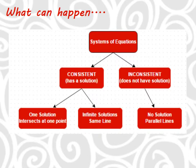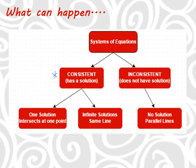Before we go too far, let's talk about what can happen — we touched on this yesterday. When you have a system of equations, it's always going to end up being consistent or inconsistent. Consistent means your system will have a solution: either one solution if the two lines intersect, or infinite solutions if the two lines land on top of each other. Inconsistent means there's no solution — the two graphs don't touch. If they're lines, those would be parallel lines.